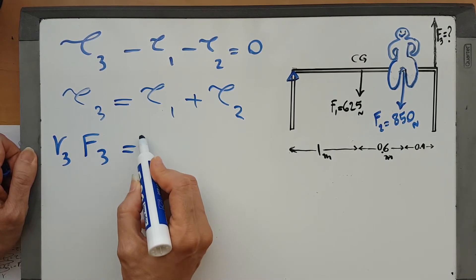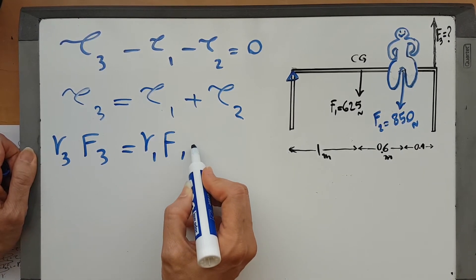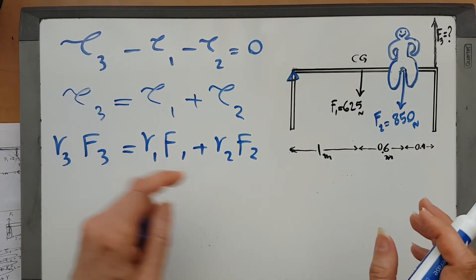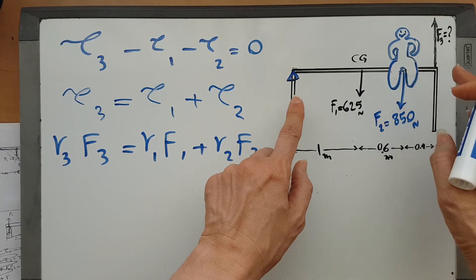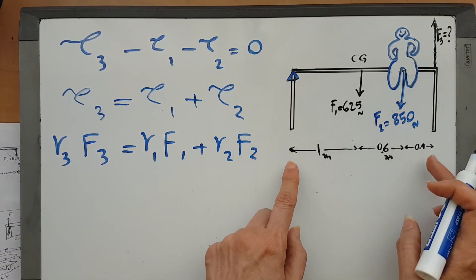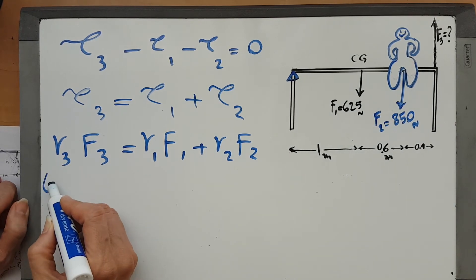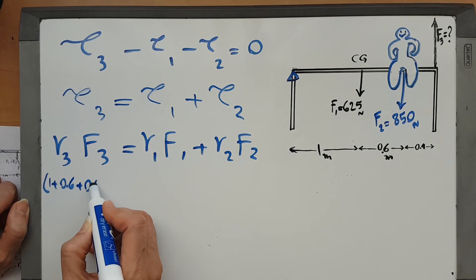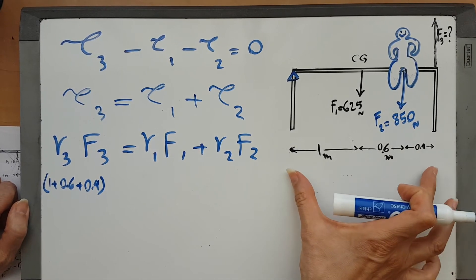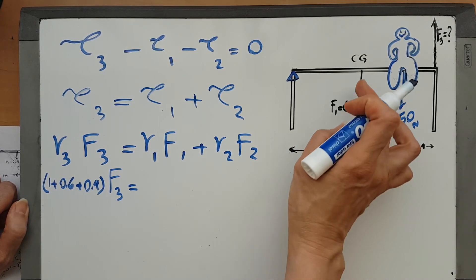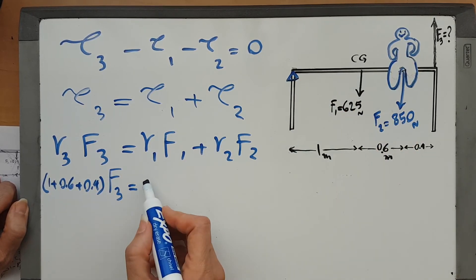R3 would be from the pivot to F3, which is actually 1 plus 0.6 plus 0.4, right? So the whole thing times F3 that we are looking for. R1 is the distance of F1 to the pivot point.